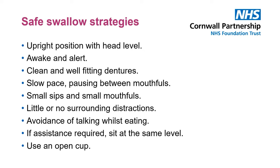Ensure that the person is taking small sips and small mouthfuls — they need to avoid overfilling their mouth. You should aim to minimise surrounding distractions so that the person can concentrate on eating and drinking. Discourage the person from talking whilst eating. If the person requires assistance, ensure that the person assisting is sitting at the same level or at a slightly lower level. This means that the person being assisted does not have to look up or tip their head back. Use of an open cup for drinking allows the person better control of the fluid in their mouth and discourages them from tipping back their head. Where you can, avoid spouted beakers and straws.